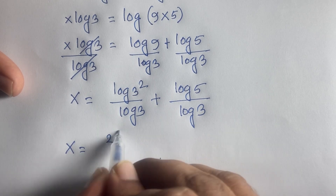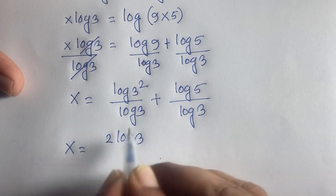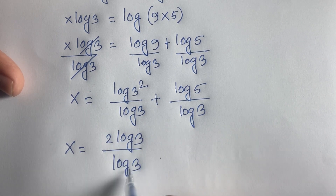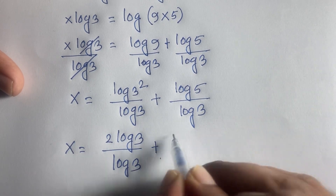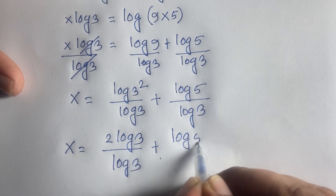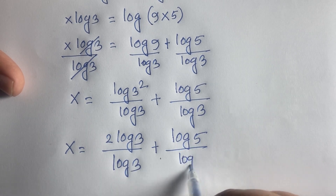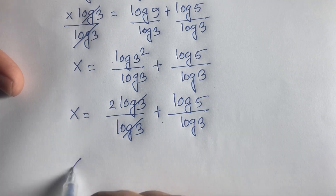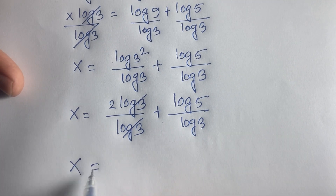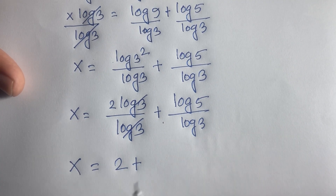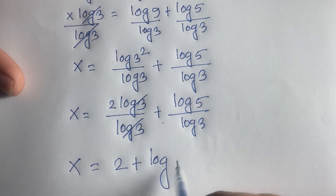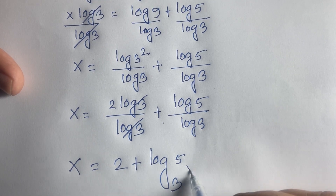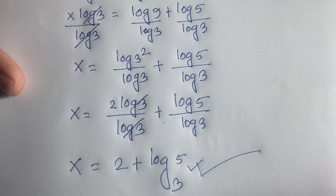Now at this moment I can see easily x is equal to 2 log 3 over log 3 plus log 5 over log 3. The log 3 over log 3 cancels and we find x is equal to 2 plus log 5 base 3. This is our final answer.